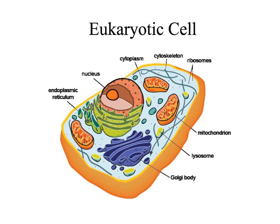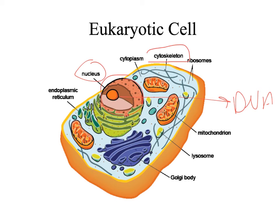This is a eukaryotic cell — specifically an animal cell, so there is no chloroplast. But plant cells are also eukaryotic. You can see there is a nucleus and the DNA is located in the nucleus. There is cytoplasm and protein molecules in the cytoskeleton.